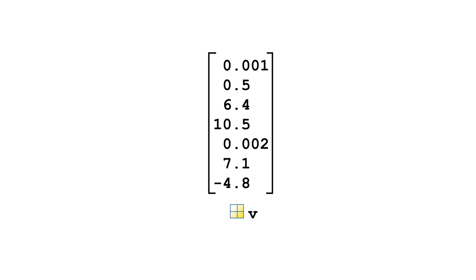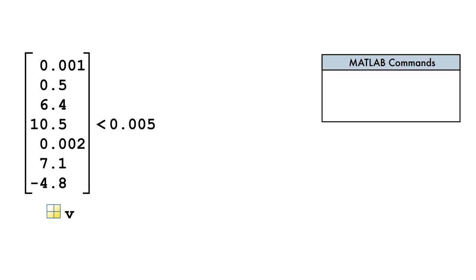For example, let us first look at how we can extract elements of v which are less than 0.005. We start by entering the command v less than 0.005, which uses a relational operator less than.